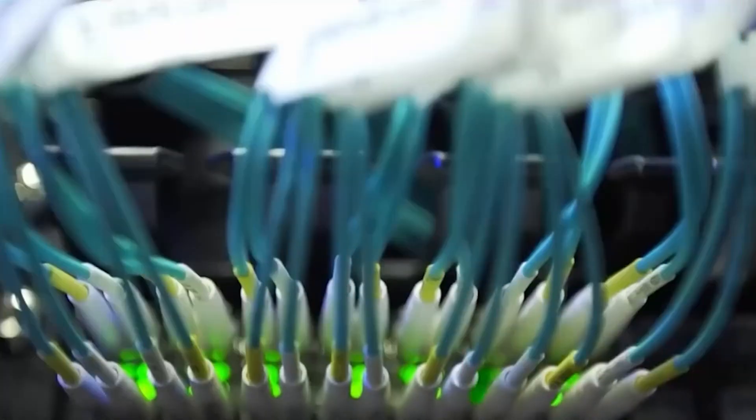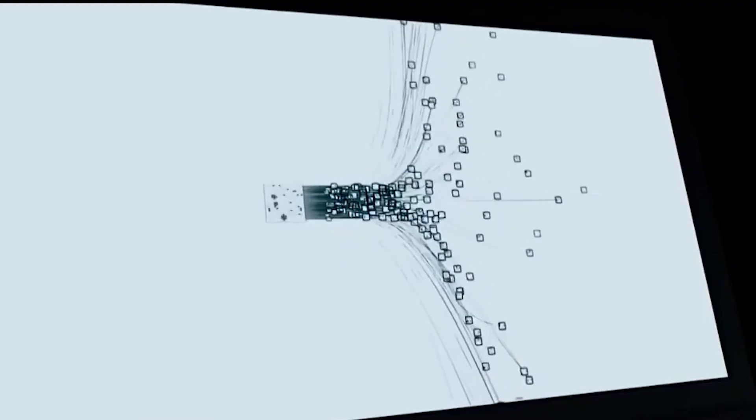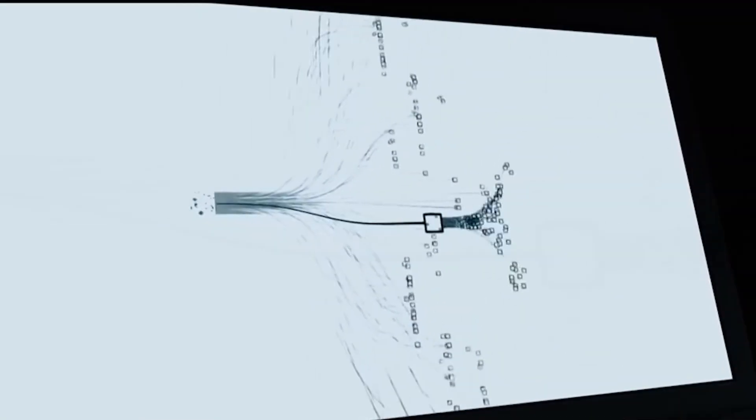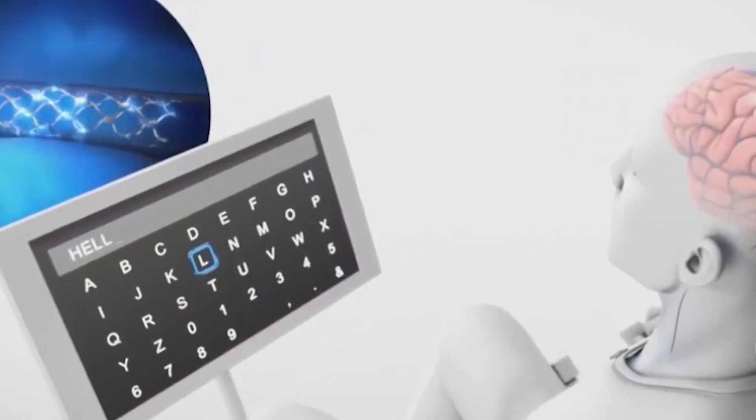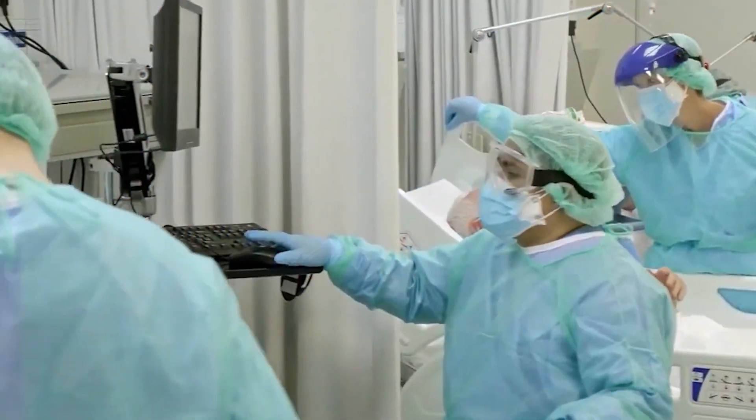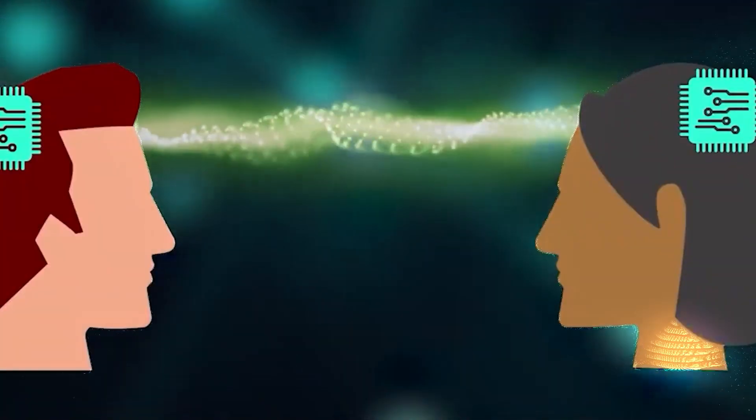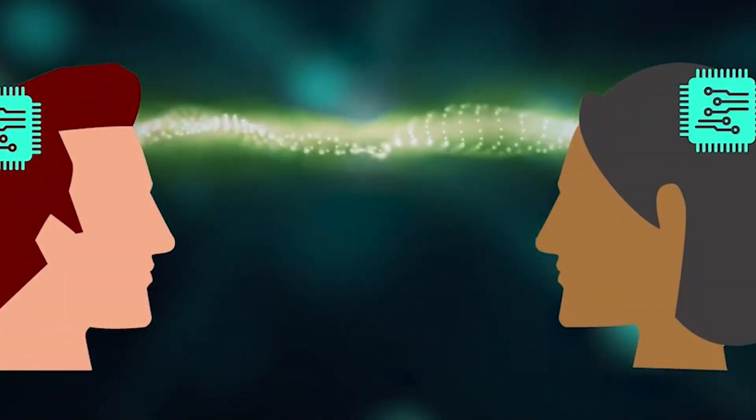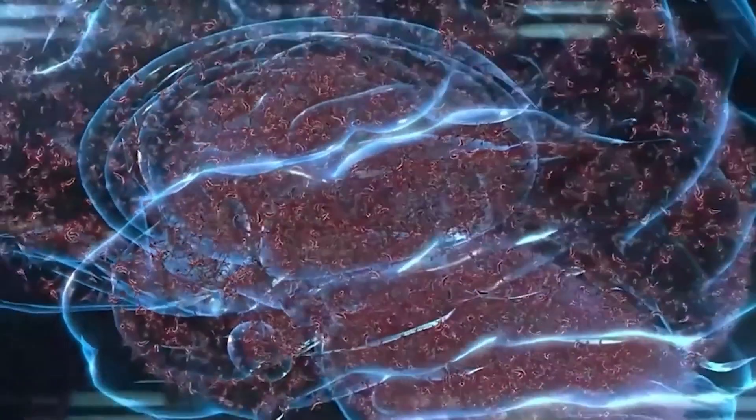Neuralink, founded in 2016 by Elon Musk, aims to develop brain-machine interfaces. The idea is to create tiny devices that can be implanted in the brain to record and stimulate neural activity. This could potentially help people with neurological conditions like paralysis and Alzheimer's, and eventually, it might allow us to upload and download thoughts.